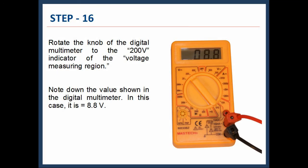Thereafter, rotate the knob of the digital multimeter to the 200 volt indicator of the voltage measuring region. Note down the value shown in the digital multimeter. In this case, it is 8.8 volts.